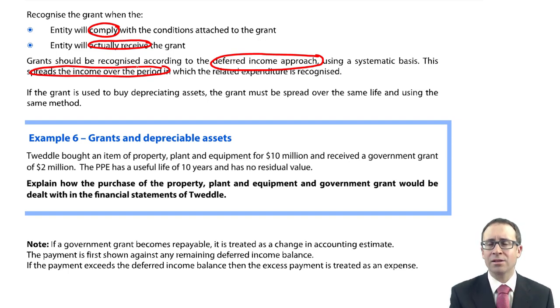then you will release that deferred income over the number of years that you have to keep the employees in employment or potentially it could be that you're just given the money from the government to help pay the wages and salaries for this year. So you will just release the deferred income over the next 12 months.